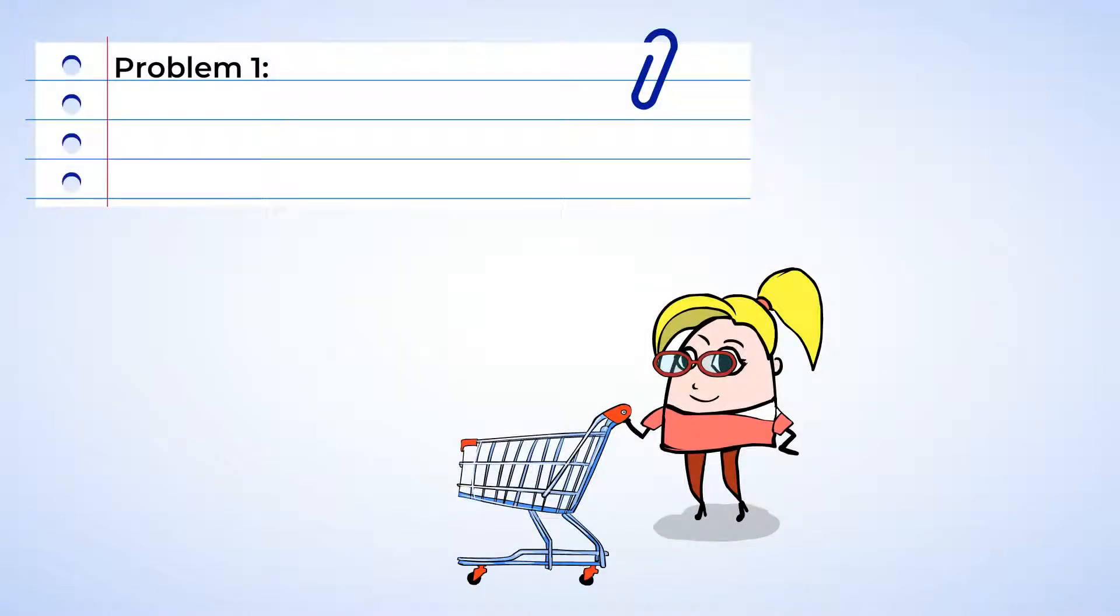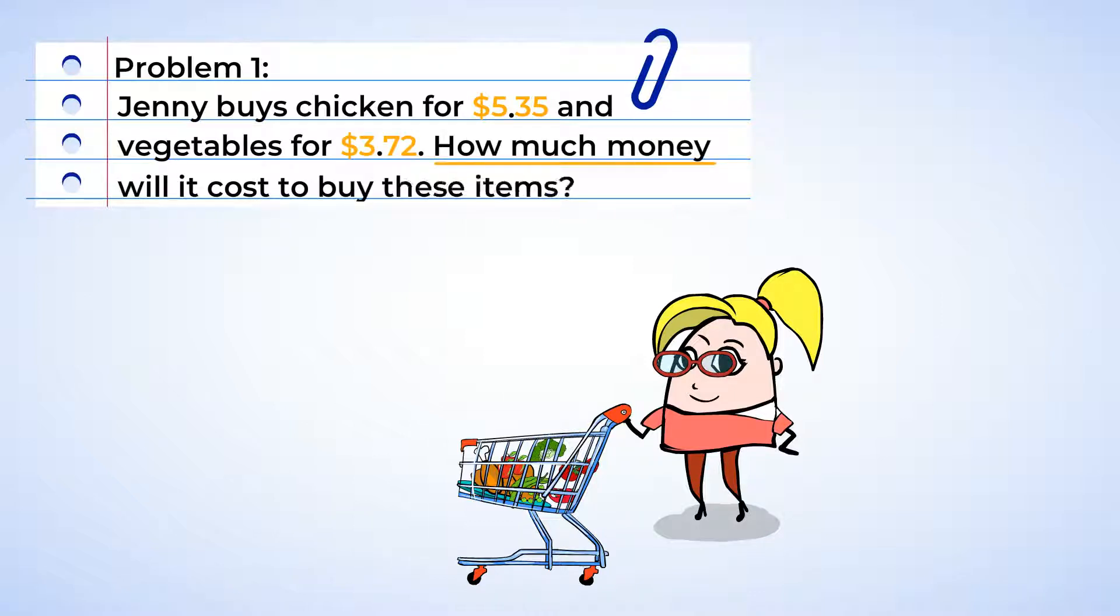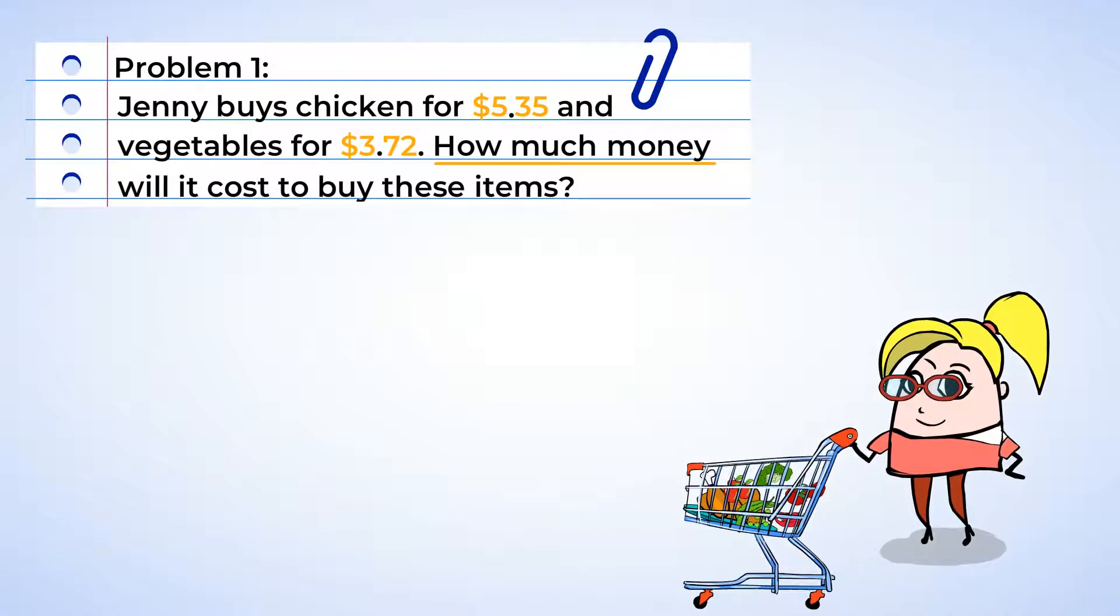Alright, here's Jenny, and she's at the store buying ingredients for dinner. She has a chicken that costs $5.35, and vegetables that cost $3.72. How much money will it cost to buy these items?